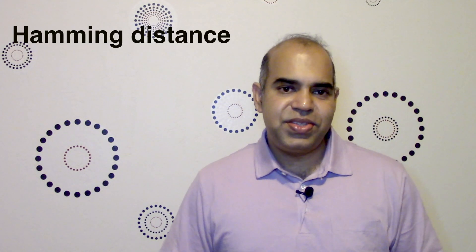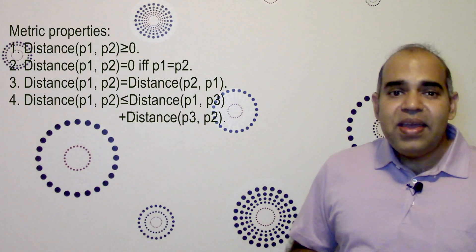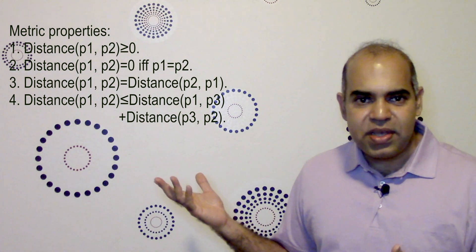Today we are discussing two distance measures for strings. One measure is called Hamming distance and the other one is called edit distance. Both these distances are real distances, meaning they satisfy the metric properties or axioms of distance.